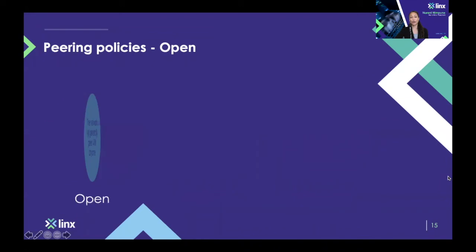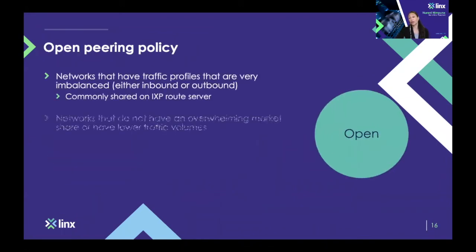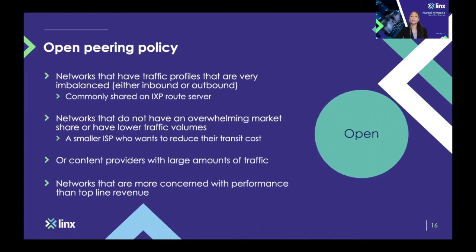Let's start by looking at open peering policies. Open peering policies are quite common among networks that have traffic profiles that are very imbalanced, be it inbound or outbound. These networks are often present at internet exchange point route servers and will peer with anyone connected to that route server. It's common among networks that don't have an overwhelming market share or have lower traffic volumes — for example, a smaller ISP that wants to cut transit costs, but also a very large content provider who wants to exchange traffic with access providers to get content as close to the end user as possible.